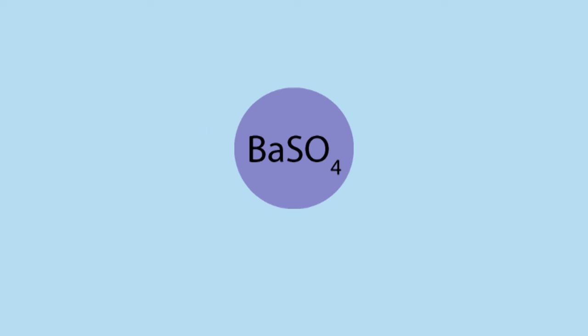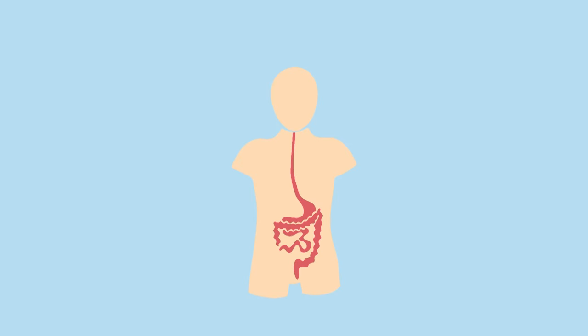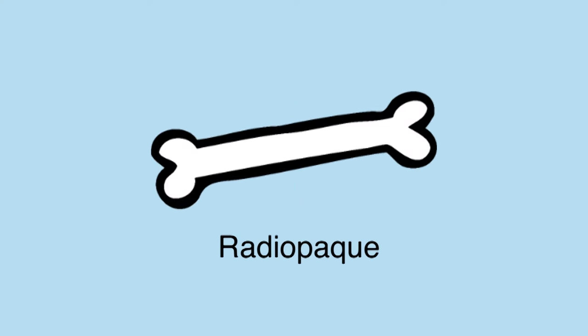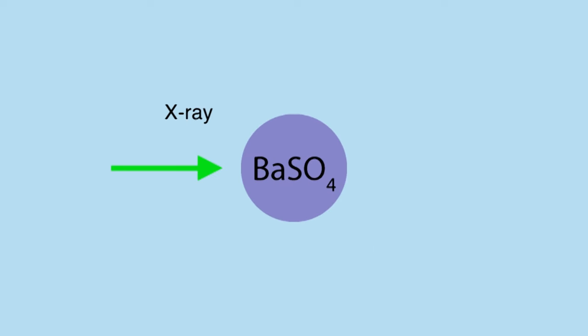In fact, barium sulfate is so insoluble that it can be ingested and passed through our gastrointestinal tract without being absorbed by our bodies. This is because it is radio-opaque, just like your bones. This means that x-rays cannot pass through them, and because of this, an x-ray image of your gastrointestinal tract can be produced.